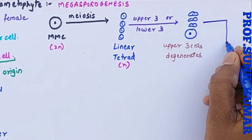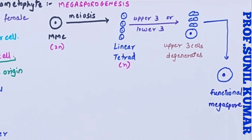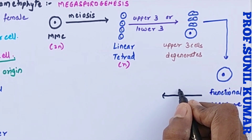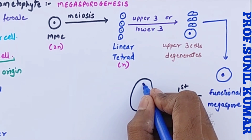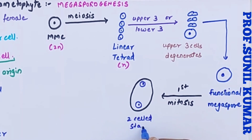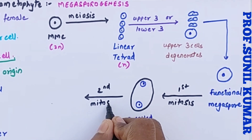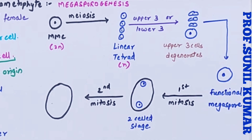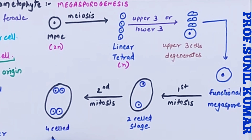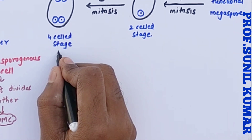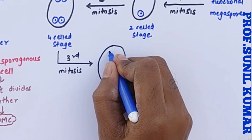This functional mega spore is haploid in nature since it is produced from the MMC by meiosis. The mega spore then undergoes first mitosis, forming a two-celled stage. This two-cell stage undergoes second mitosis to form a four-celled stage. The four-cell stage then undergoes a third mitosis, resulting in an eight-cell stage where four cells are present at each pole.